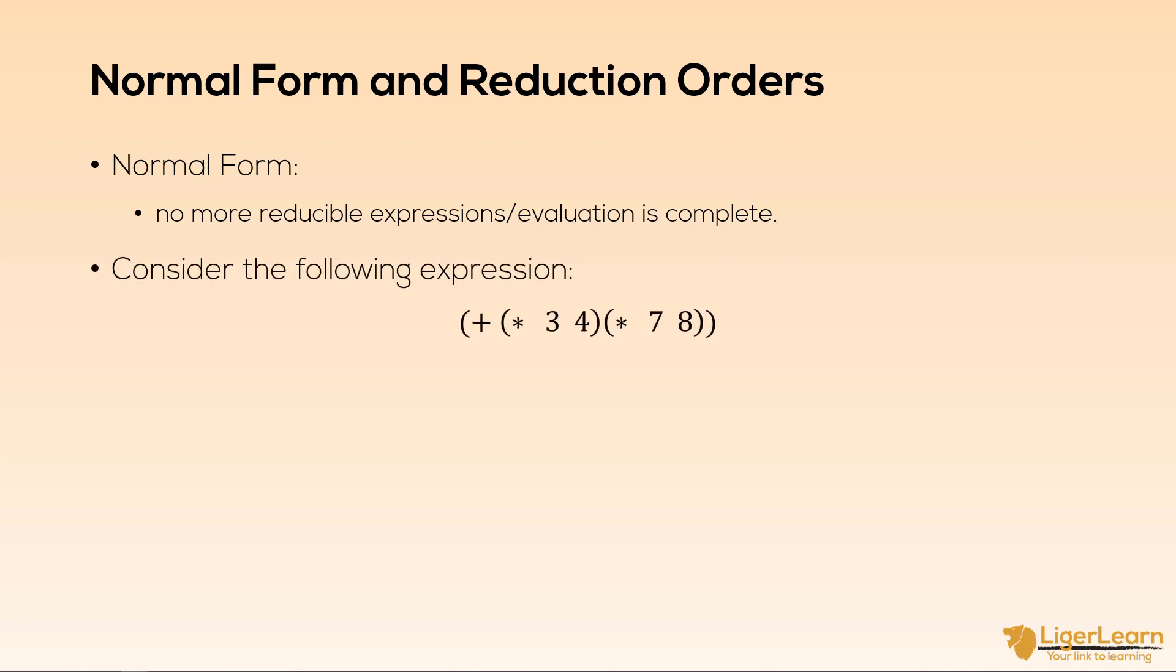There are two orders in which this expression can be reduced. In reduction order 1, we always choose the leftmost reducible expression and reduce that. Let's go through the steps. The first step is to identify the leftmost reducible expression and then reduce it. We then again choose the leftmost reducible and reduce that, and then we reduce the final leftmost reducible expression to reach the normal form of 68.